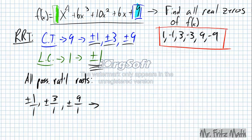So let me set up my synthetic division here. And I'm going to use all the coefficients of this polynomial. So I have a 1, a 6, a 10, a 6, and a 9. Let's start with 1 as a possible zero.